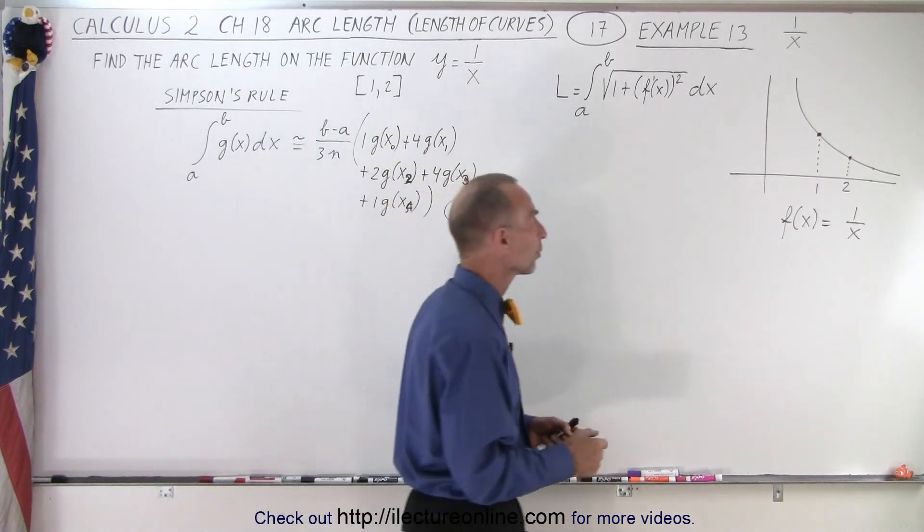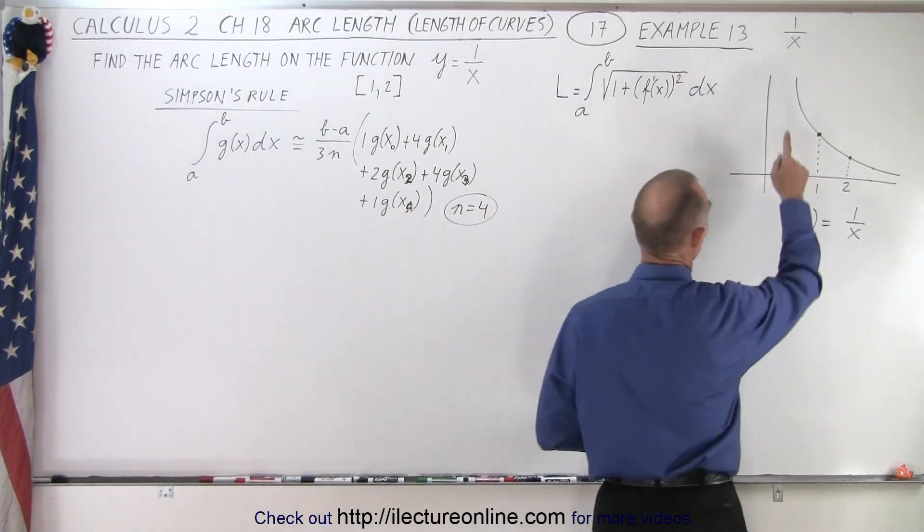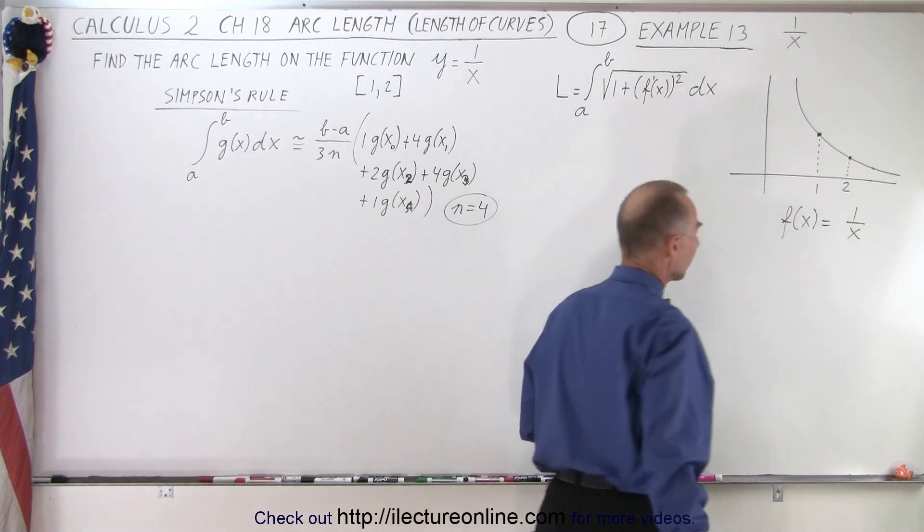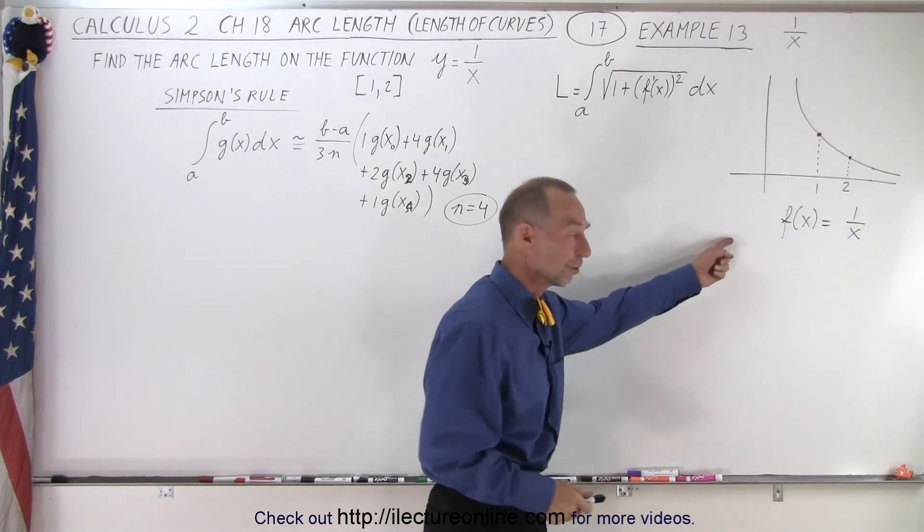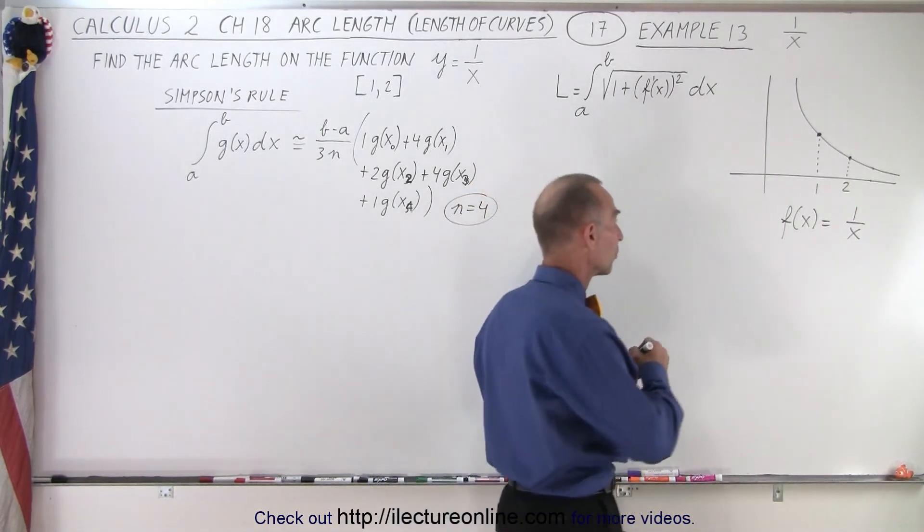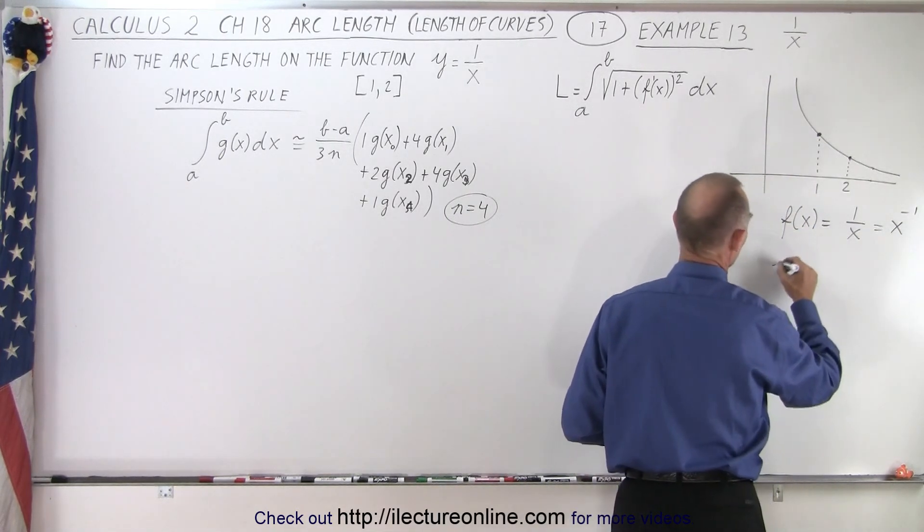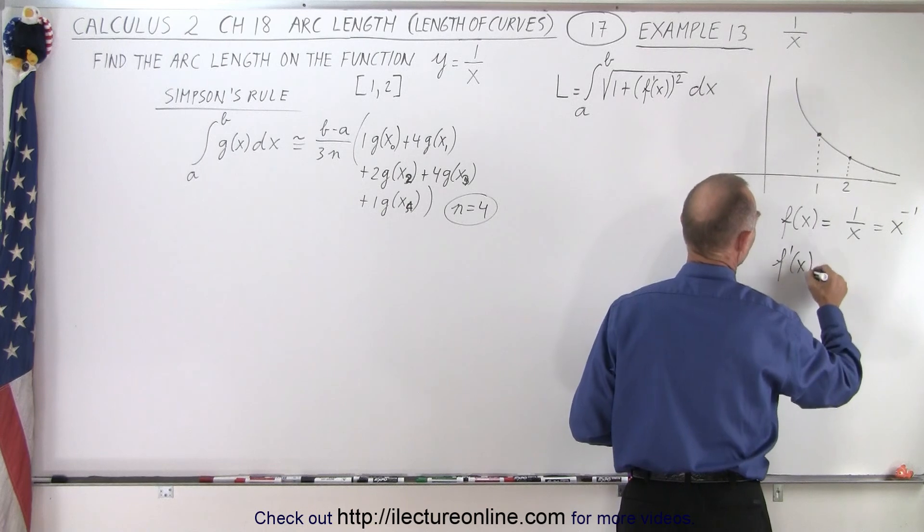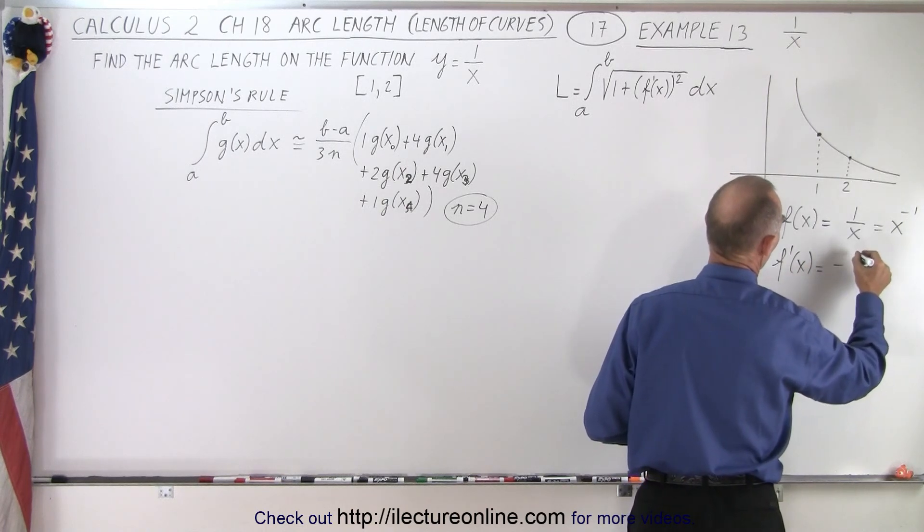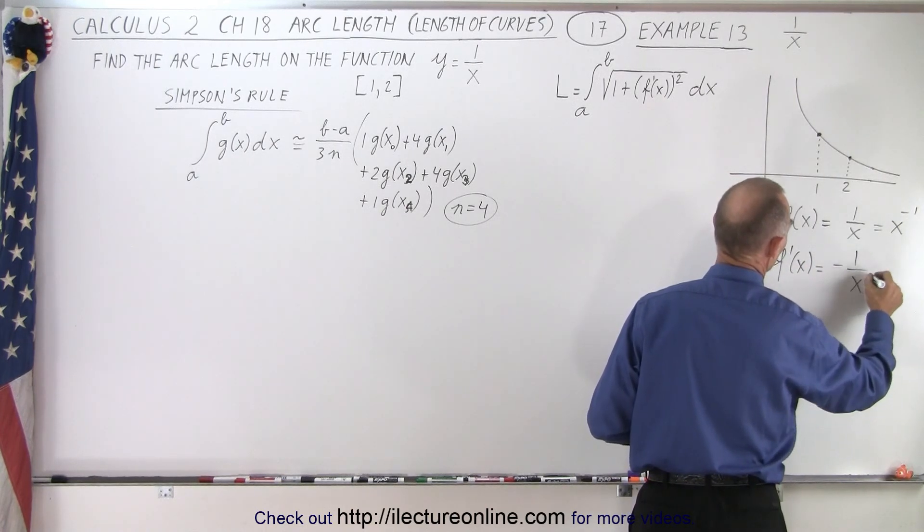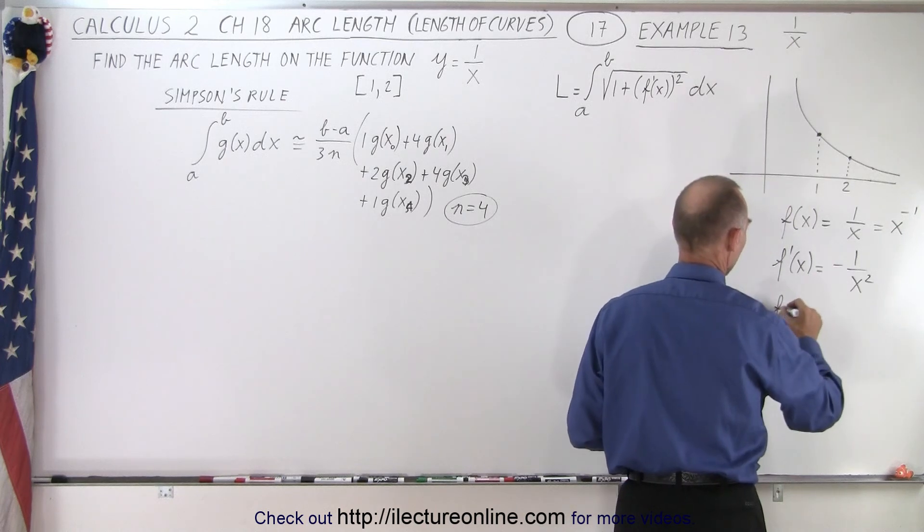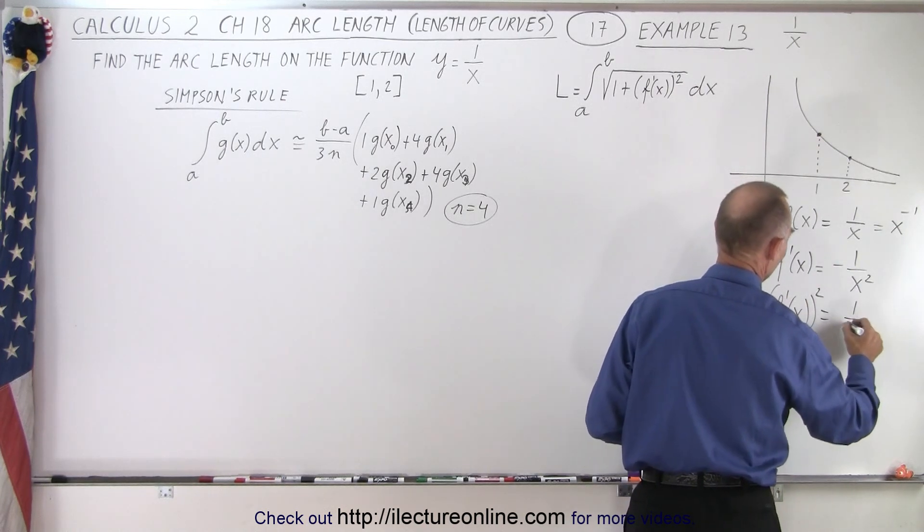So what we're trying to do here is we're trying to find the length of the function 1 over x from x equals 1 to x equals 2. So here's our function, f of x equals 1 over x. So the derivative, this is essentially x to the minus 1. So the derivative f prime of x, that is equal to minus 1 over x squared. And then if we square that, we end up with 1 over x to the fourth.